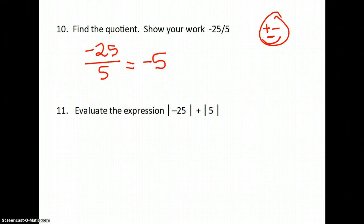Now we're going to evaluate the expression, the absolute value of -25 plus the absolute value of 5. Now you know the absolute value will always be positive. So the absolute value of 25 is 25. The absolute value of 5 is 5, and your answer is 30. You must remember that the absolute value will always be positive.